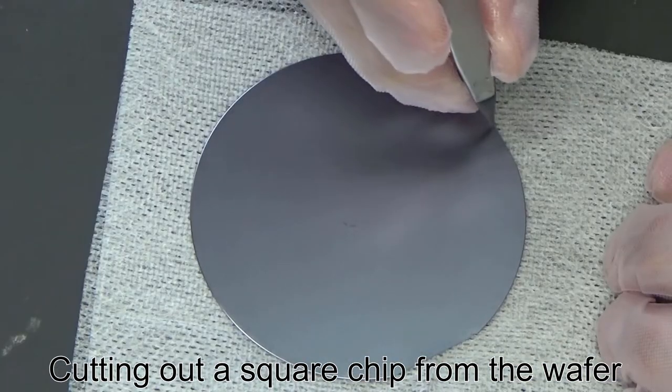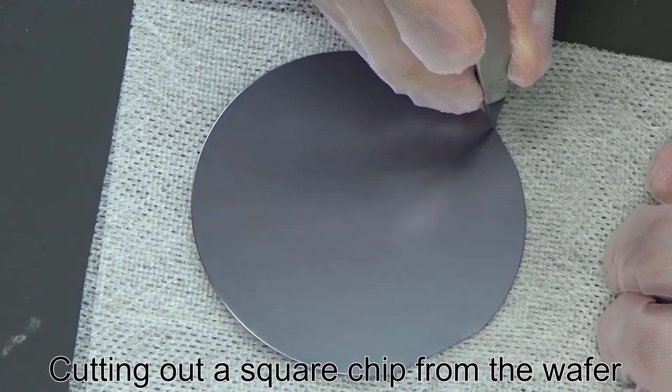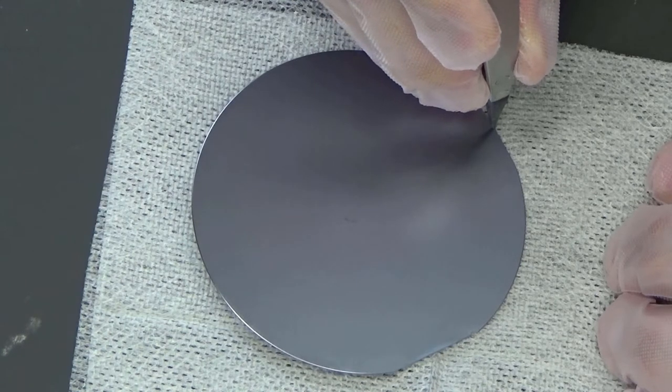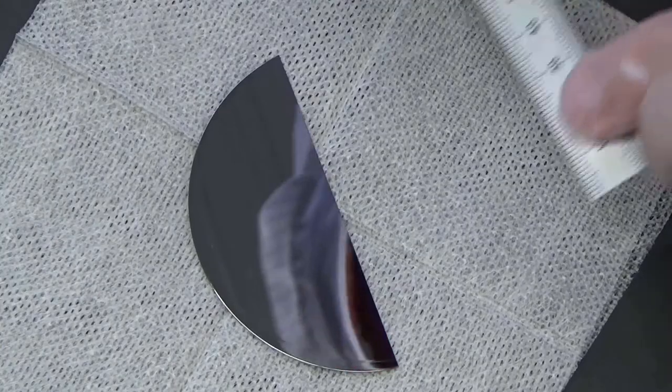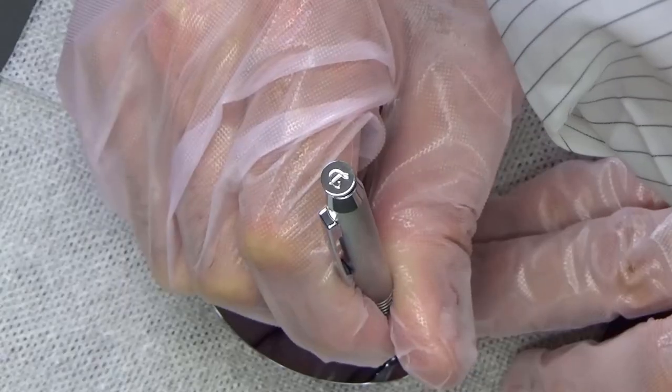Then, we apply force at this location to split the wafer cleanly along one of its crystallographic directions. We repeat this process to create a square chip.